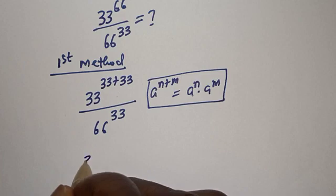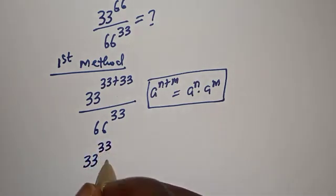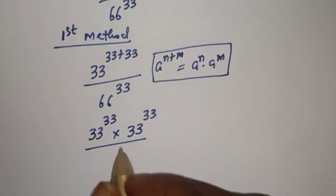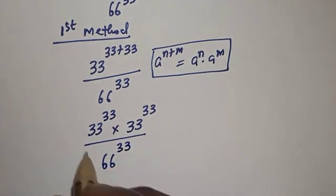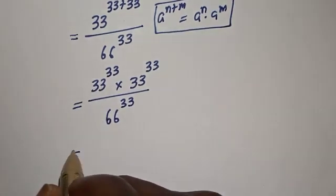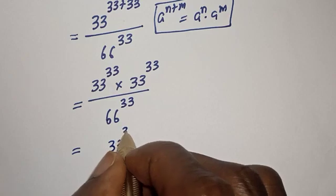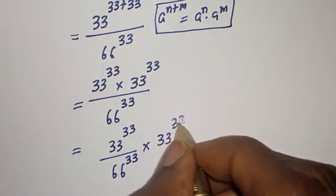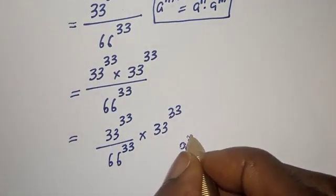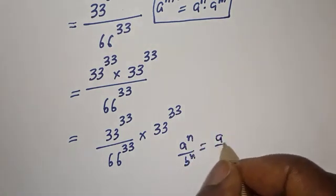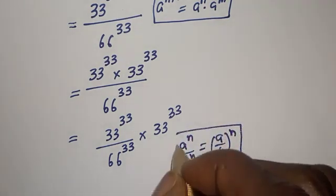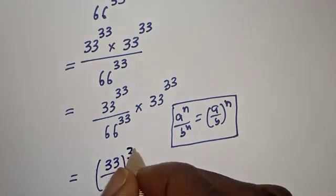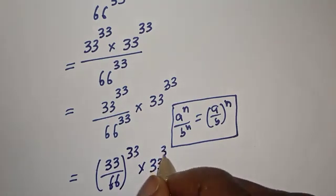So 33 raised to power 33 plus 33 can be written as 33 raised to power 33 multiplied by 33 raised to power 33. If you have a raised to power n over b raised to power n, this is equal to a over b to the power of n. Equal to 33 over 66 raised to power 33, because of the same power, multiplied by 33 raised to power 33.